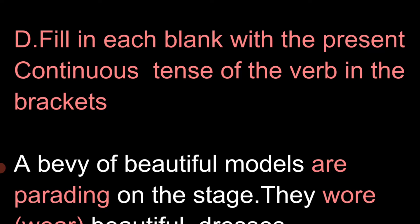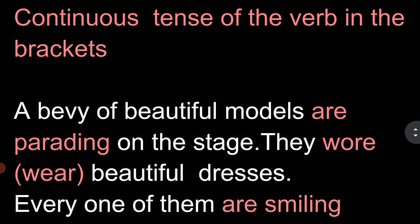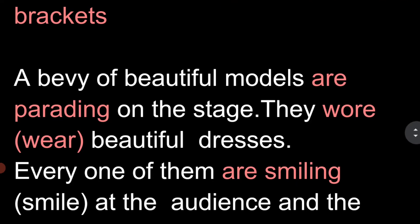We are starting today. Here, a baby of beautiful models are parading on the stage. A baby is a group of people belonging to one group. Here is a present continuous pattern. Here is a plural pattern. There were beautiful dresses.